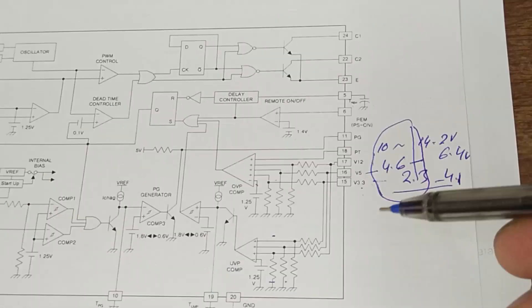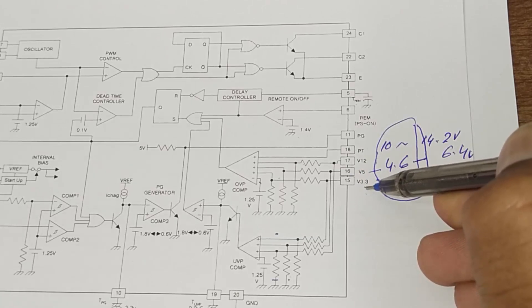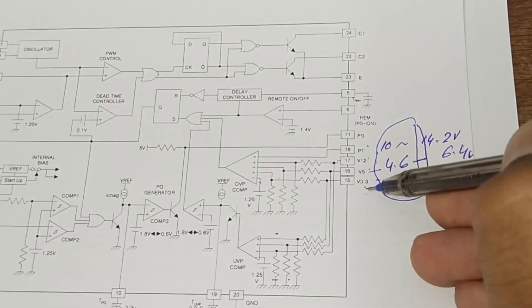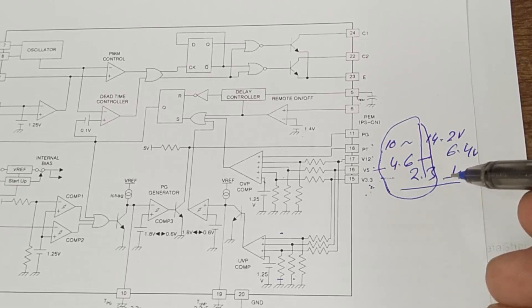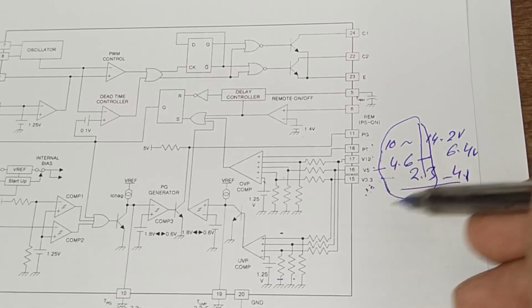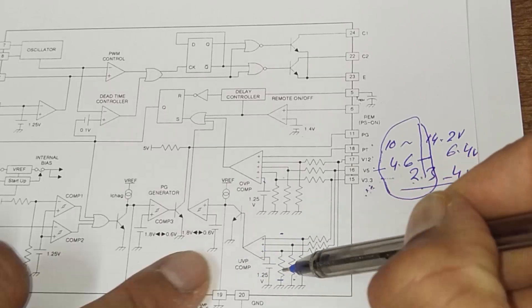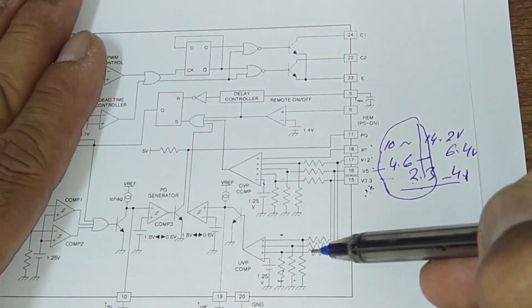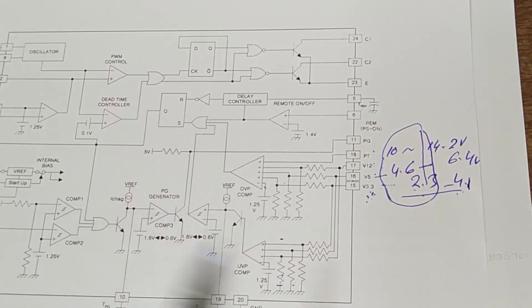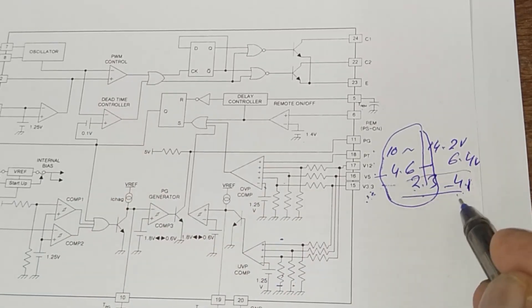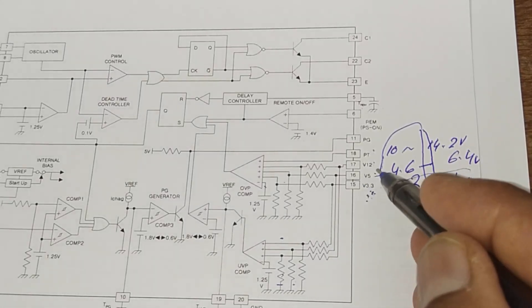The under-voltage and over-voltage protection pins are V3.3, V5, V12, and the PT pin. The 3.3V detector monitors the processor voltage. If this pin remains around 3.3V, the system is good. If it drops below 2.3V, the low-voltage comparator activates and turns off the system. If the voltage goes above 4.1V, the over-voltage comparator activates and turns off the power supply. The IC monitors both conditions.